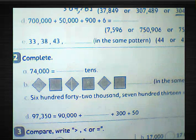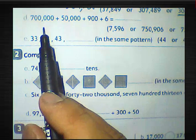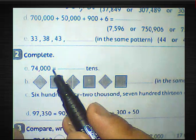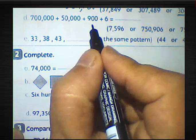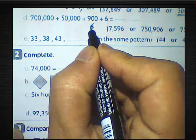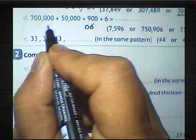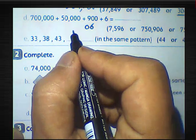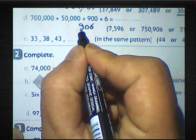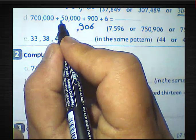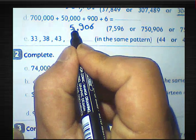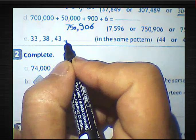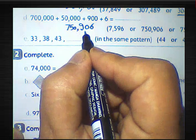Part D: 700,000 plus 50,000 plus 900 plus 6. We write 6 in the ones place, 0 in the tens place, 9 in the hundreds place, 50,000 in the ten-thousands place, and 700,000. The result will be 750,906.